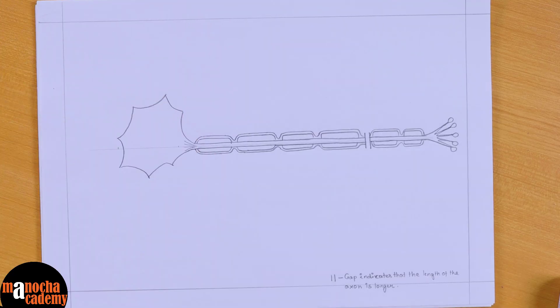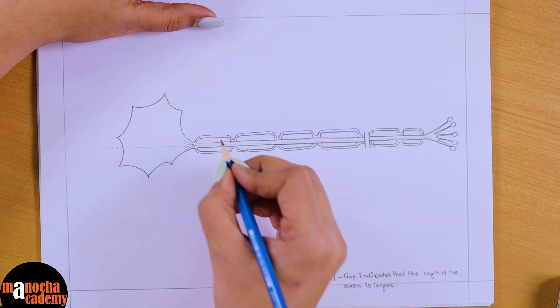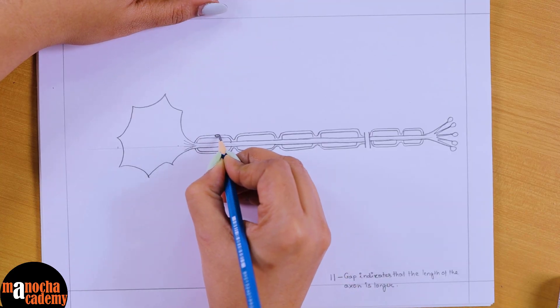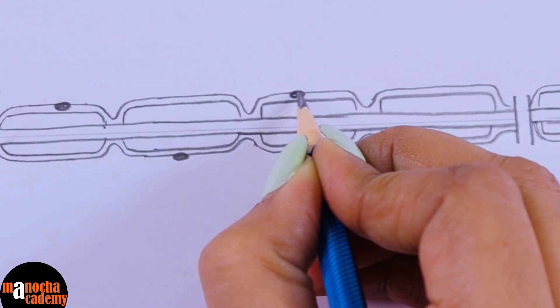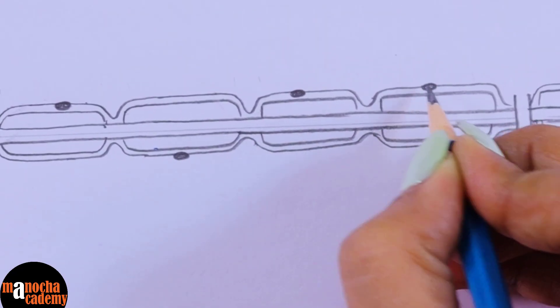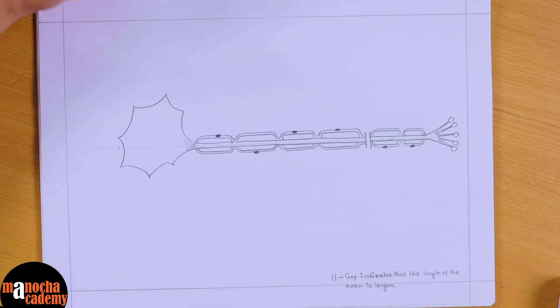Okay, so that's the neurilemma. Now the neurilemma, if you remember, is made up of cells which are called Schwann cells. So you can see some of the nuclei of these Schwann cells on the myelin sheath, so we'll draw a few dots here wherever you want on the myelin sheath. You can draw it which will show the nucleus of the Schwann cells.